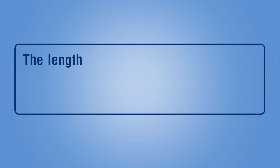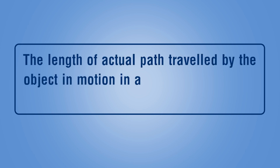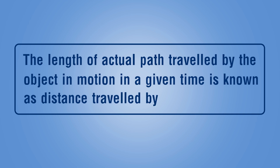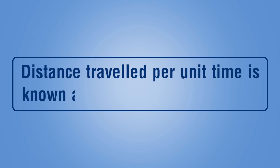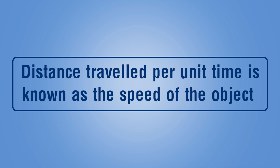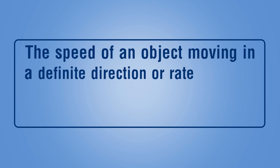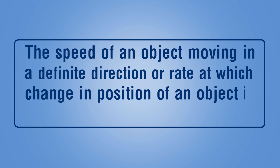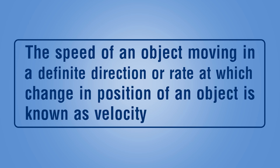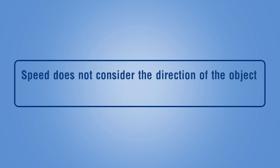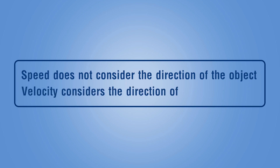Theory: if the position of an object is changing with respect to its surroundings, we can say the object is in motion. The length of the actual path traveled by the object in a given time is known as the distance traveled. Distance traveled per unit time is known as the speed of the object. The speed of an object moving in a definite direction, or the rate at which the position of an object changes, is known as velocity.